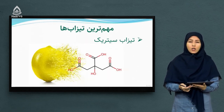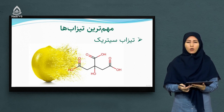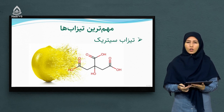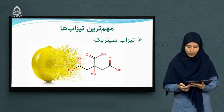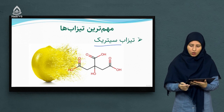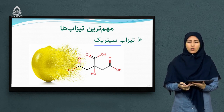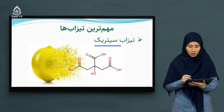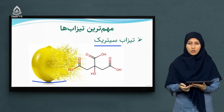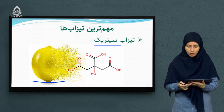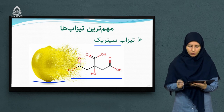مهم‌ترین تضاب‌هایی که در تعاملات کیمیایی در محیط لبراتواری با آنها سر و کار داریم، نمونه و مثال‌هایی از آنها را با هم کار می‌کنیم. از جمله تضاب‌هایی که در مواد خوراکی مانند لیمو یافت می‌شود، تضاب سیتریک اسید است که فرمول مالکولی آن را هم بر روی تصویر مشاهده می‌کنید.